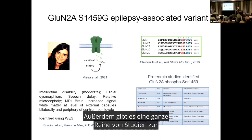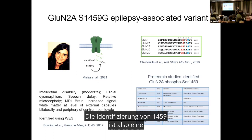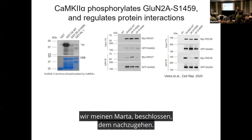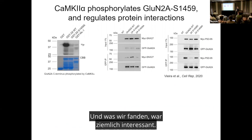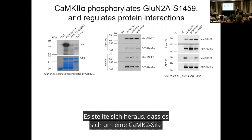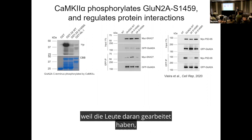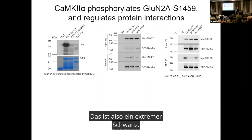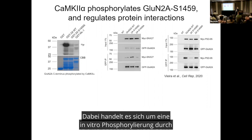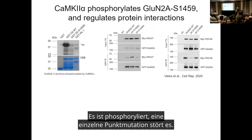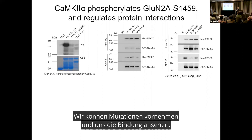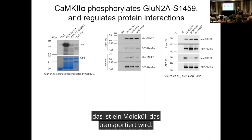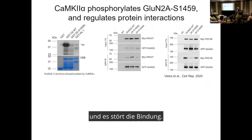This particular serine, S1459, is in a part of the extreme C-terminal domain that structural studies predicted to affect binding to sorting nexins. Also, several phosphoproteomics studies identified S1459 as a phosphorylation site on GluN2A, but the kinase was unknown. We decided to follow up, and what we found was pretty interesting — it turned out to be a CaMKII site, which was a surprise because people have been working on CaMKII and GluN2B for decades but this had not been reported in GluN2A.